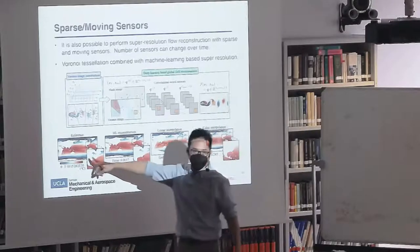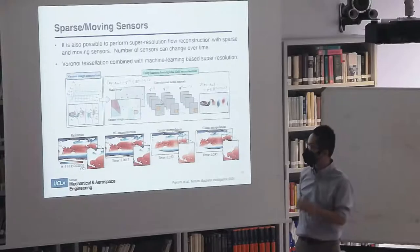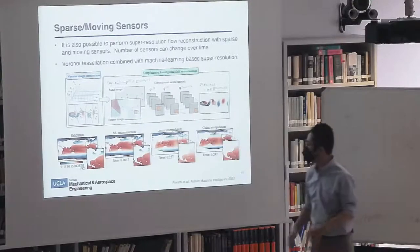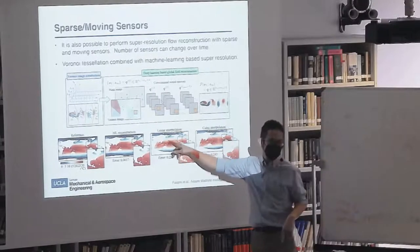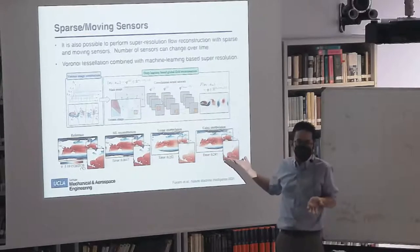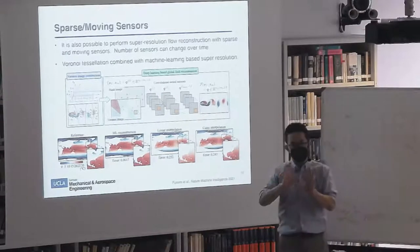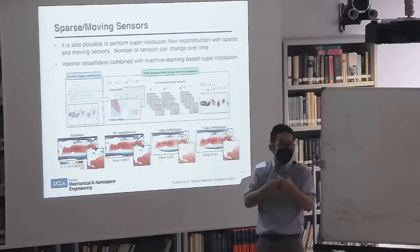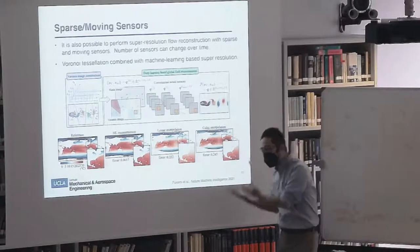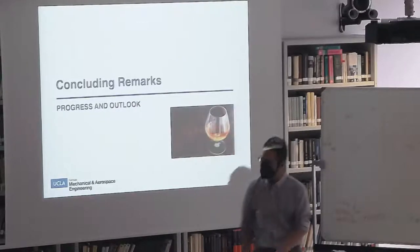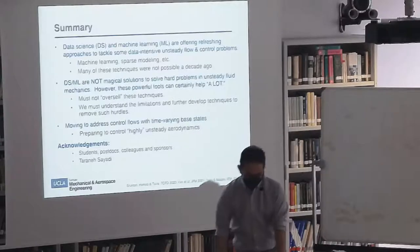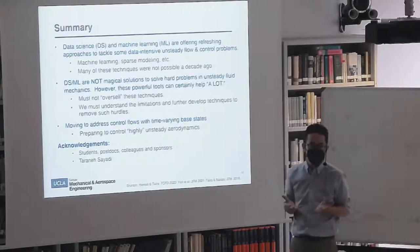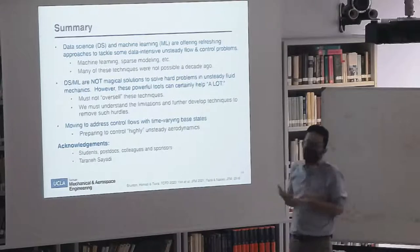We applied this to reconstruct sea surface temperature distributions from NOAA satellite data using about 40–50 sensors identified by yellow dots. Linear cubic interpolation can't recover it, but machine learning can, and you can even change the sensor locations. With this kind of information, we're hopeful we can get situational awareness of the flow field to use for flow control — we're not there yet, but we're preparing the tool sets. I conclude that data science and machine learning are offering really refreshing approaches to tackle the data-intensive problems coming from turbulence.